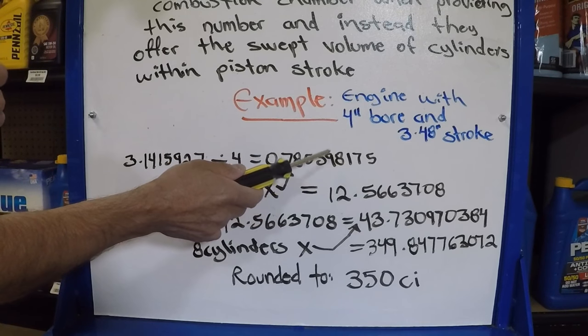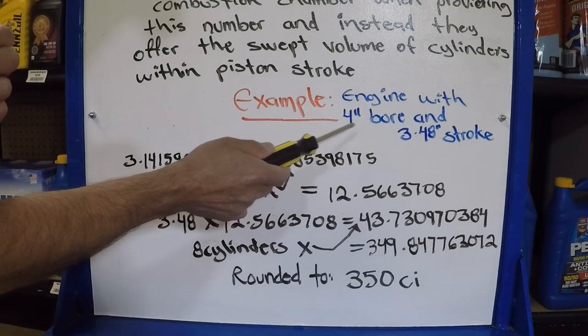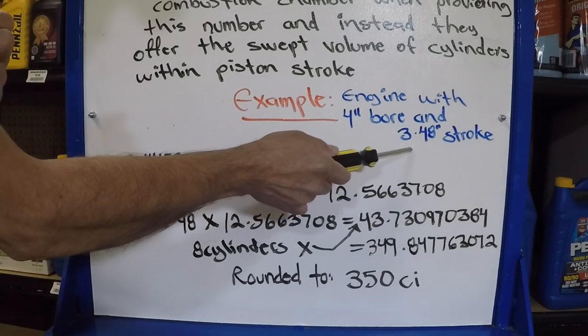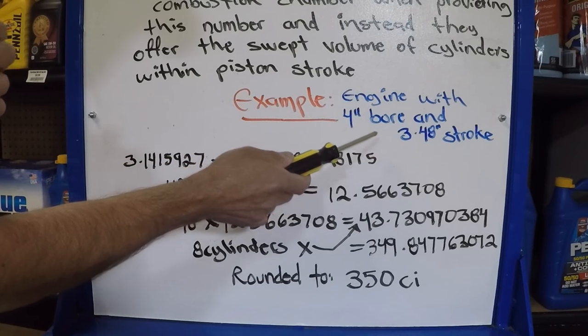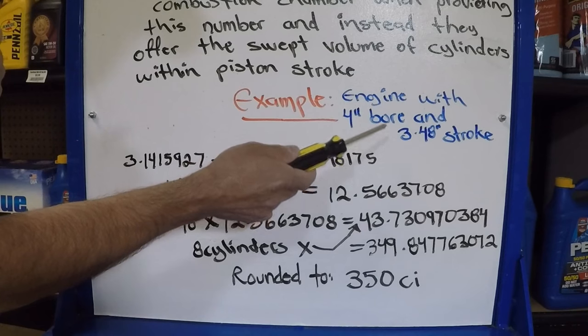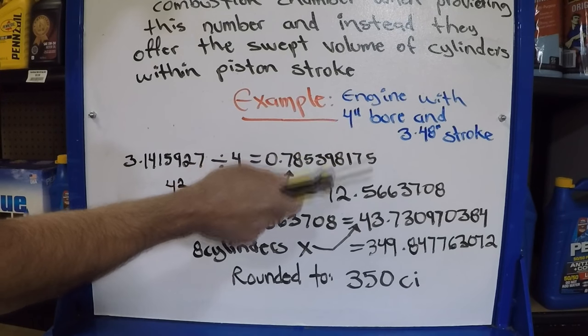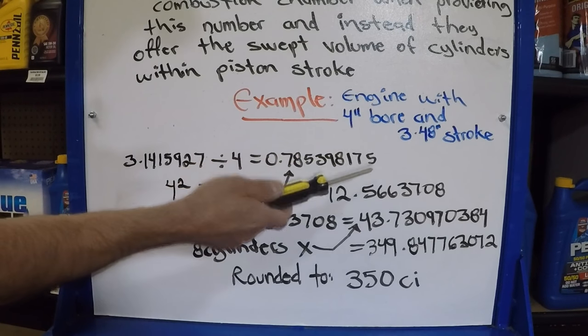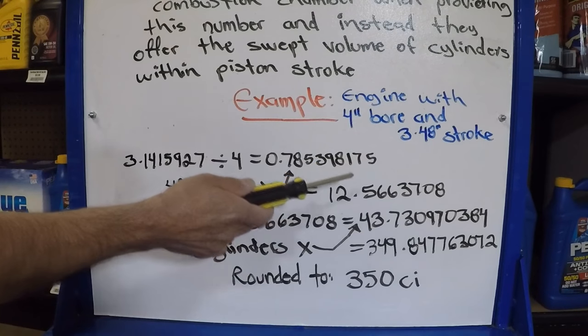If you want to do a little tweaking, then you start playing with these numbers. How much can you bore it? Can you go with a longer stroke? And by knowing how to do it, you can stay within the rules and maximize the cubic displacement of your engine and hopefully put you on the winning circle. So there you go.